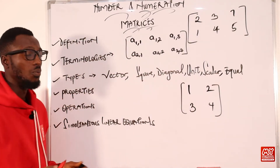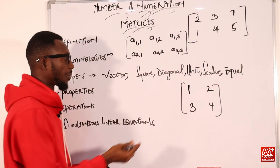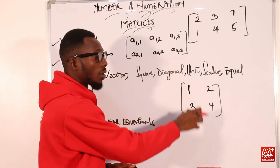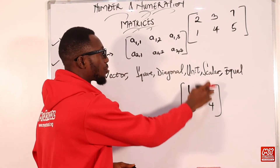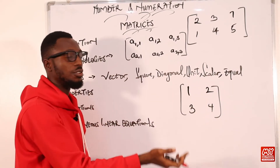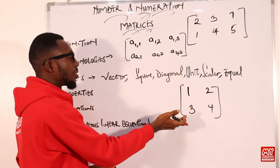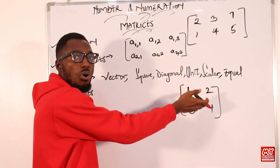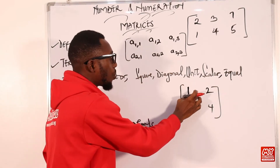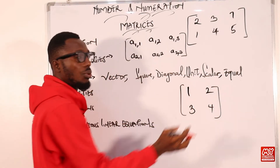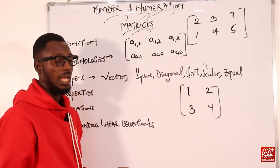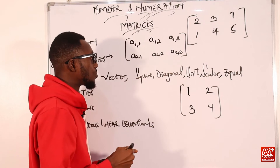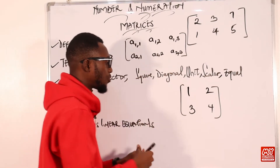Looking at this matrix: one, two rows and one, two columns. A square matrix is one with an equal number of rows and columns. That's all there is to it.